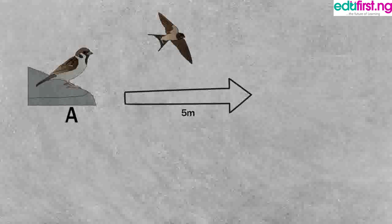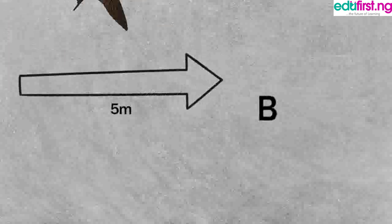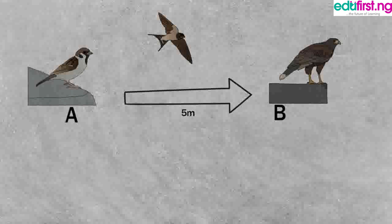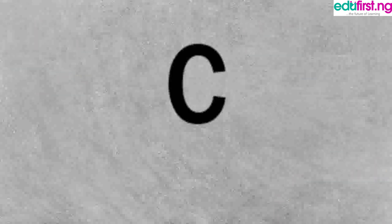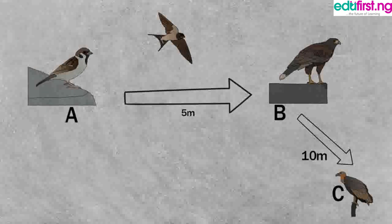This is another example. In this example, what is the total distance covered by the bird? The total distance covered by the bird is 15 meters. This is because the bird flew from its origin to position B at a distance of 5 meters, to position C at a distance of 10 meters, covering a total distance of 15 meters.